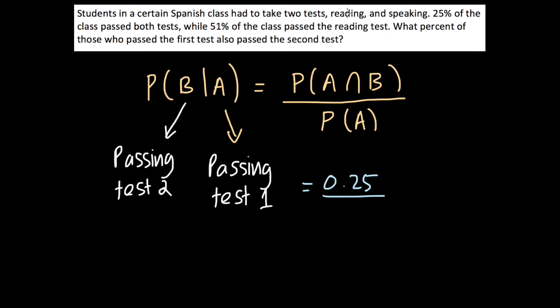And reading, we know, was the first test. And hence, this is going to be 0.51. And this gives us 0.49. And because the question asks us what percent, we can convert this into a percentage by multiplying it by 100. And this is going to give us 49%.